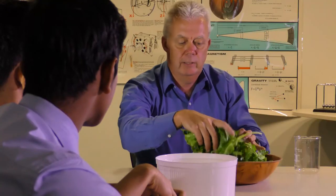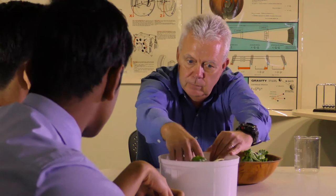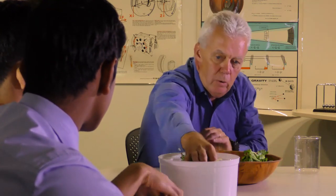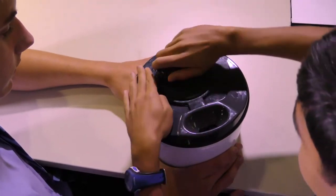The wet salad leaves are placed into the perforated basket. The lid is placed on the basket. We spin the perforated basket.